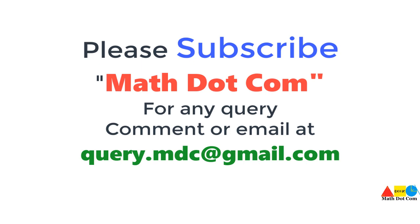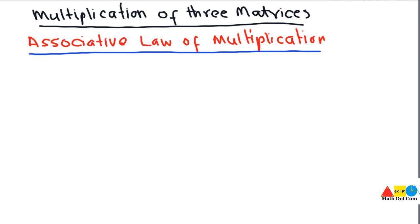Please subscribe math.com for any query, comment or email. Hello everyone. In our previous lecture we have seen how you can multiply two matrices together. But one thing left is how you will multiply if you are given three matrices. For that purpose we have used the associative law of multiplication that will help to multiply the three matrices together.